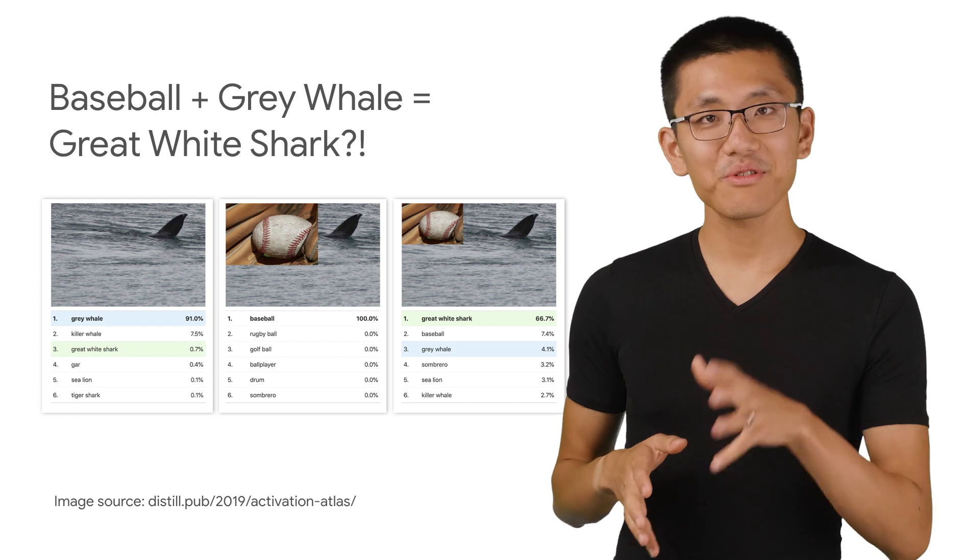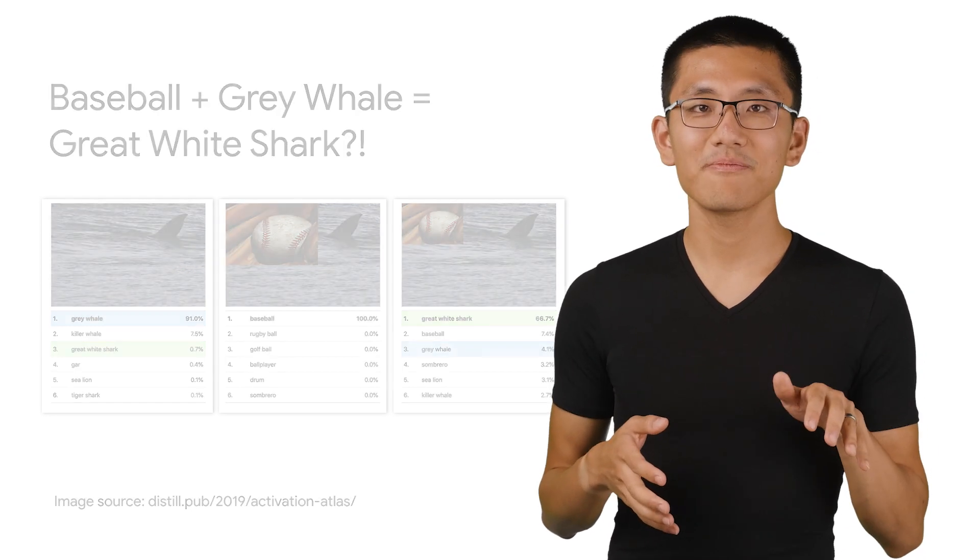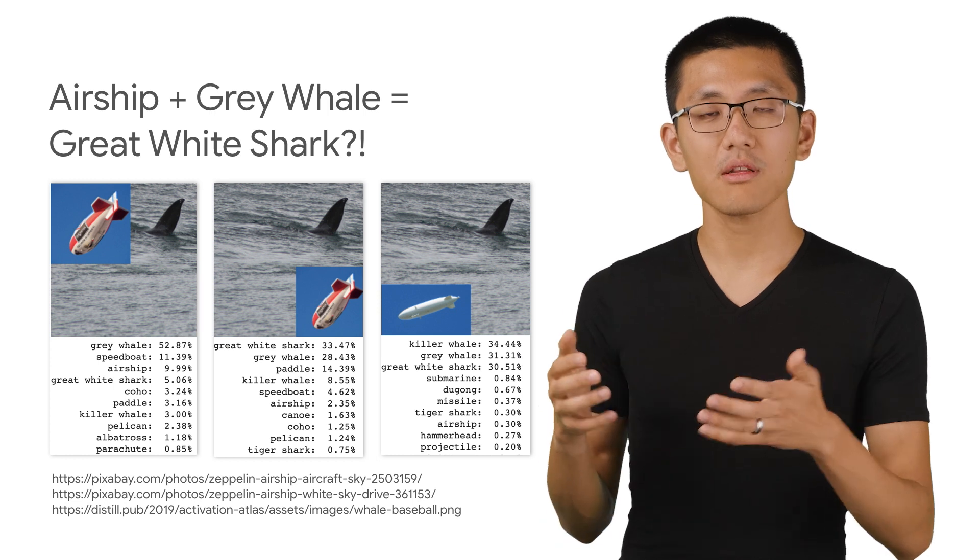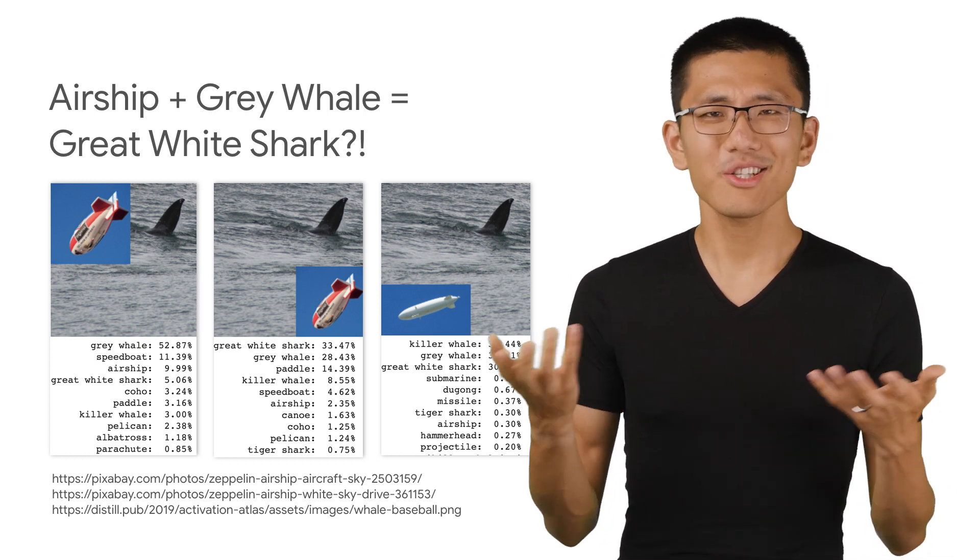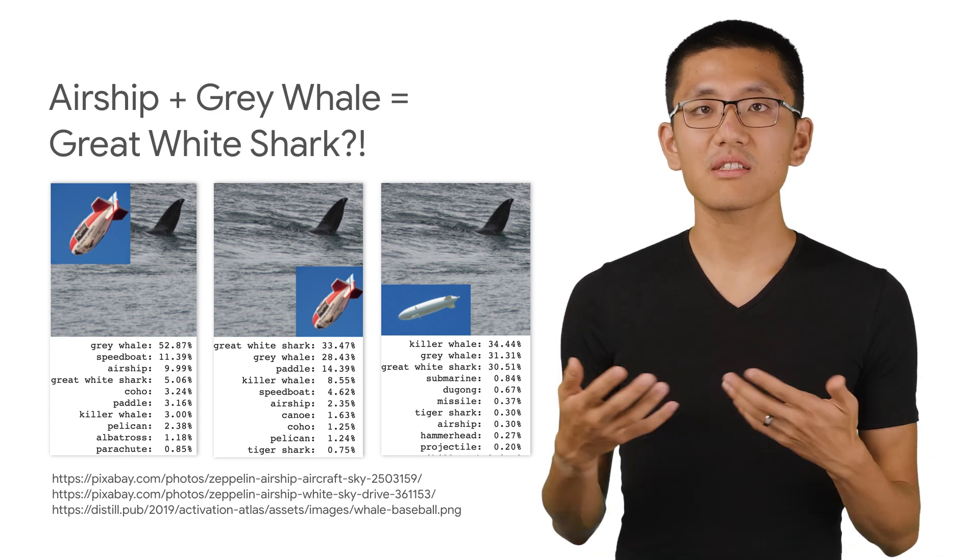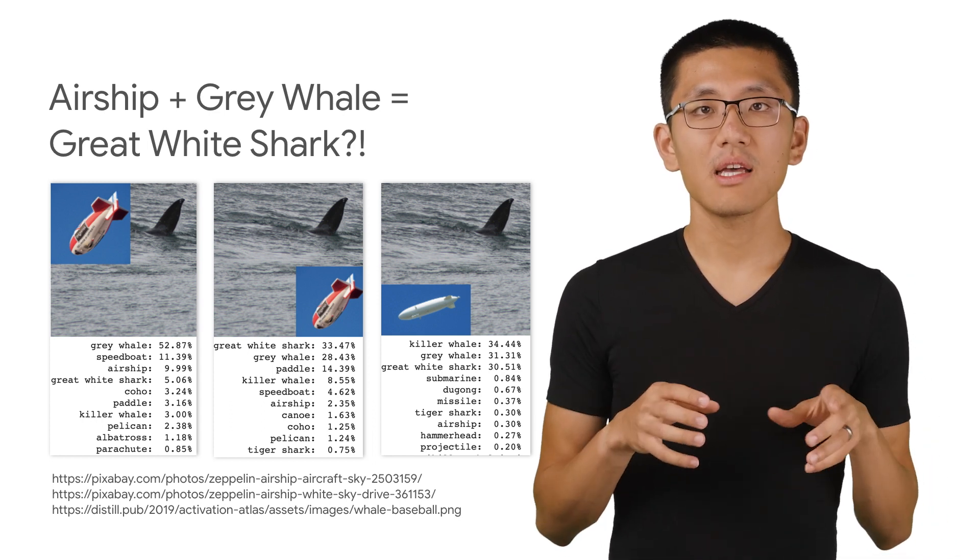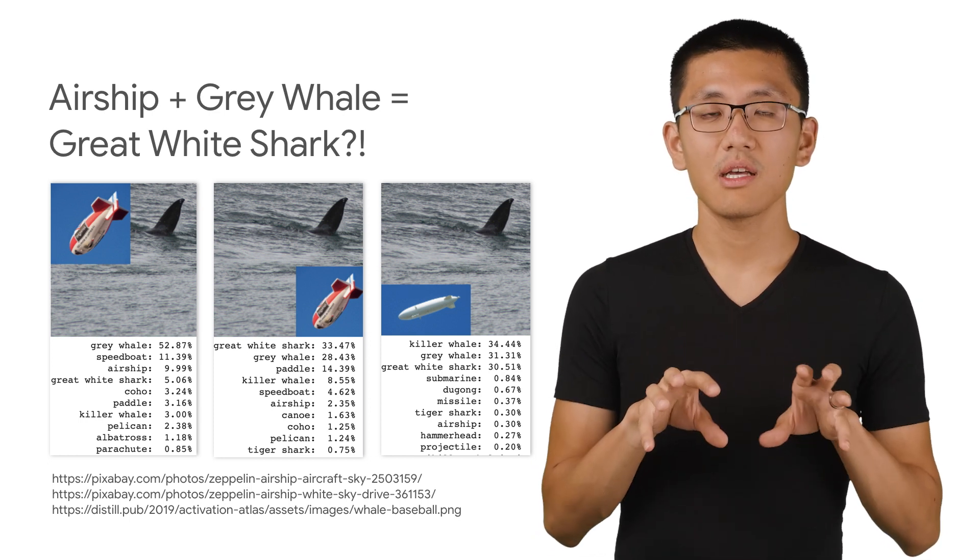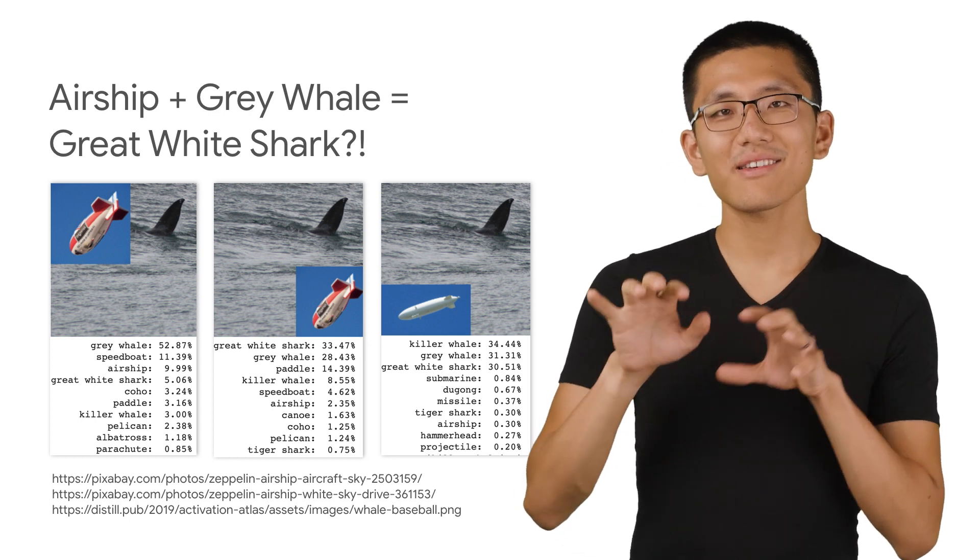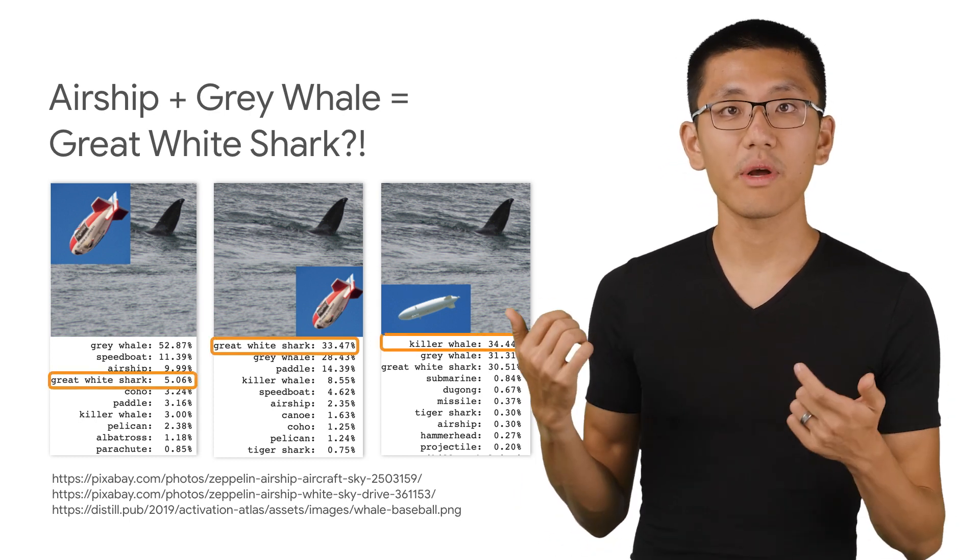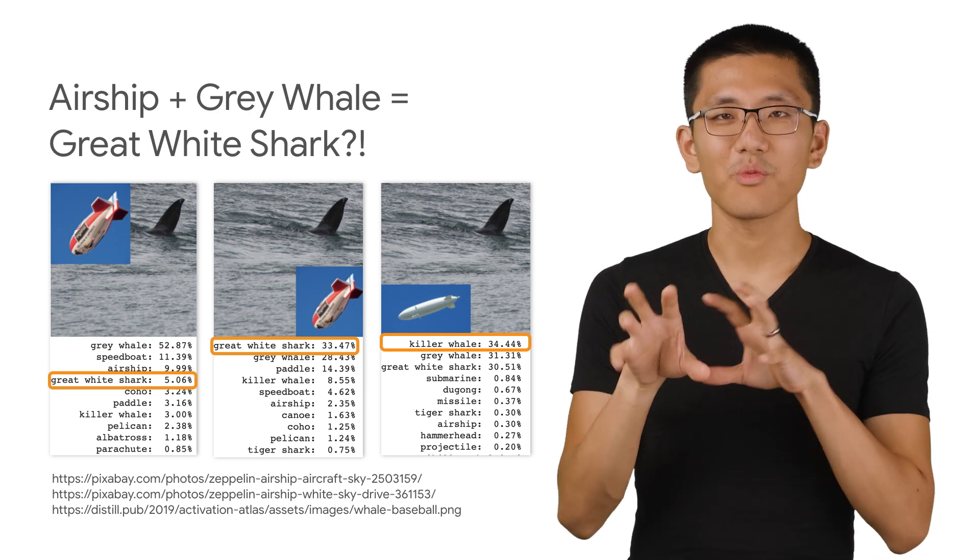This is pretty fun, and you can look for all sorts of other oddities. I also found in the mixed 5B layer for great white shark that airship is another kind of unusual label associated with great white sharks. So I tried to do something similar. I went online and found some images of airships and tinkered around with the sizing and position of the airship image. And I found that I could eventually convince the model that it was a great white, or in some cases, a killer whale, depending on the airship I use and where I put it.